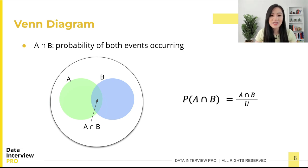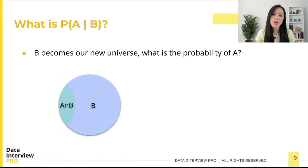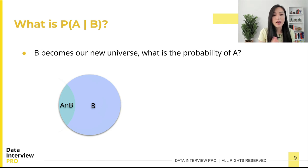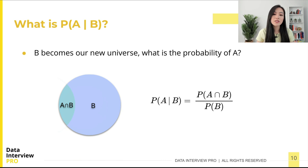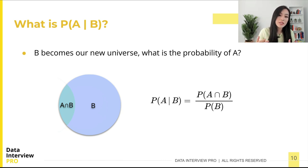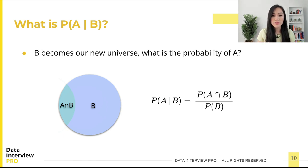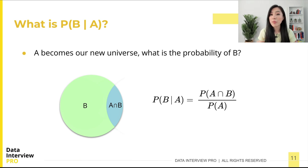Now let's see how we can represent the conditional probability — the probability of A given B. From the diagram, B becomes our new universe. Given B, we want to know the probability of A. In other words, once we confine ourselves to just event B, what is the probability of A? From the diagram, it's simply the probability of the intersection of A and B divided by the probability of B. So we represent P(A|B) as P(A ∩ B) over P(B).